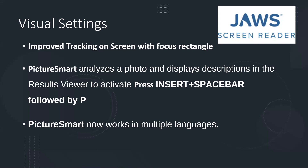We also want to highlight Picture Smart, because it's a feature we want more users to take advantage of. It analyzes a photo and displays descriptions in the Results Viewer. To activate it, press Insert+Space bar followed by P. It provides descriptions of images on webpages such as a photo on Facebook. For Windows clipboard, press Insert+Space bar followed by P, then C.